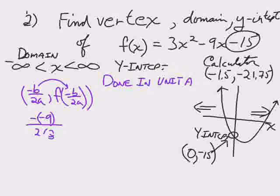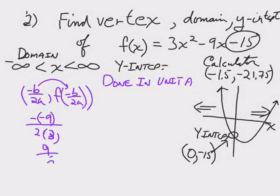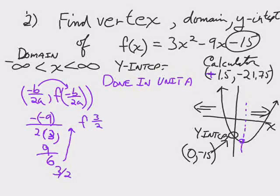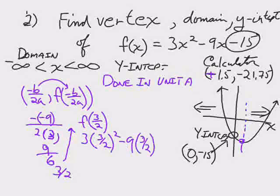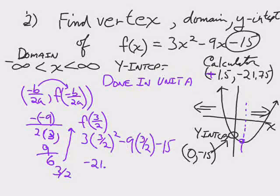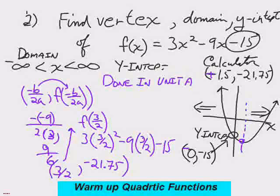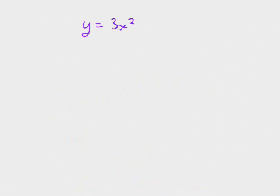You'll find the vertex. You took the negative of the b divided by 2 times the a, which worked out to be 3 halves, not negative 3 halves. Then you took that 3 halves and you plug it back into the equation to find the associated y, and you'll find out that the y is negative 21 and 3 quarters. And I corrected the equation there. That was a warm-up for quadratic functions.